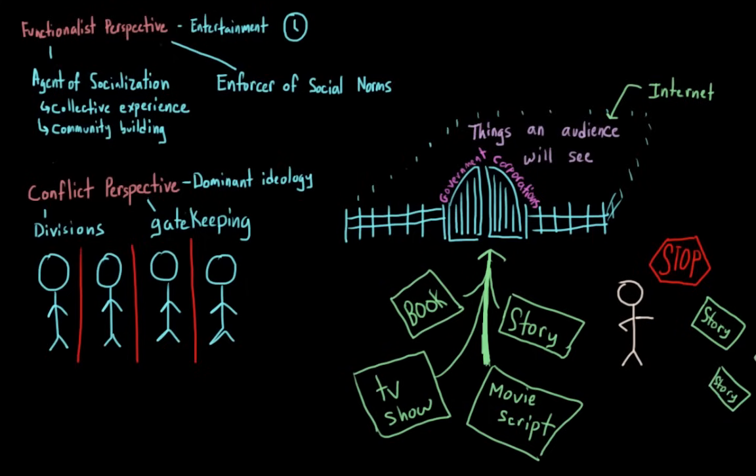The people who make the choices about what media is produced, the gatekeepers, are predominantly white, male, and wealthy. And as a result, stories representing the views of racial minority groups, women, LGBT individuals, and working class people are typically underrepresented. And because of this divide, portrayals of minority groups can often be stereotyped, or guided by unrealistic generalizations about a certain group of people.